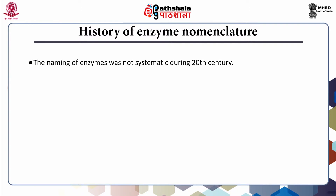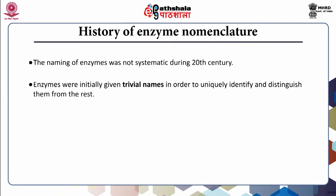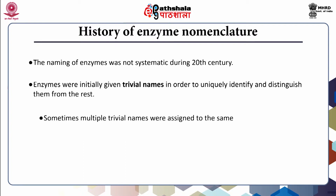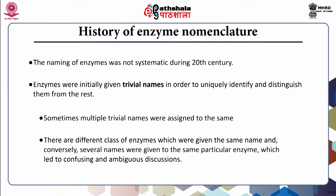The naming of enzymes was not systematic during the 20th century. Enzymes were initially given trivial names in order to uniquely identify and distinguish them from the rest. Sometimes, multiple trivial names were assigned to the same enzyme, or different classes of enzymes were given the same name. Conversely, several names were given to the same particular enzyme, which led to confusion and ambiguous discussions.